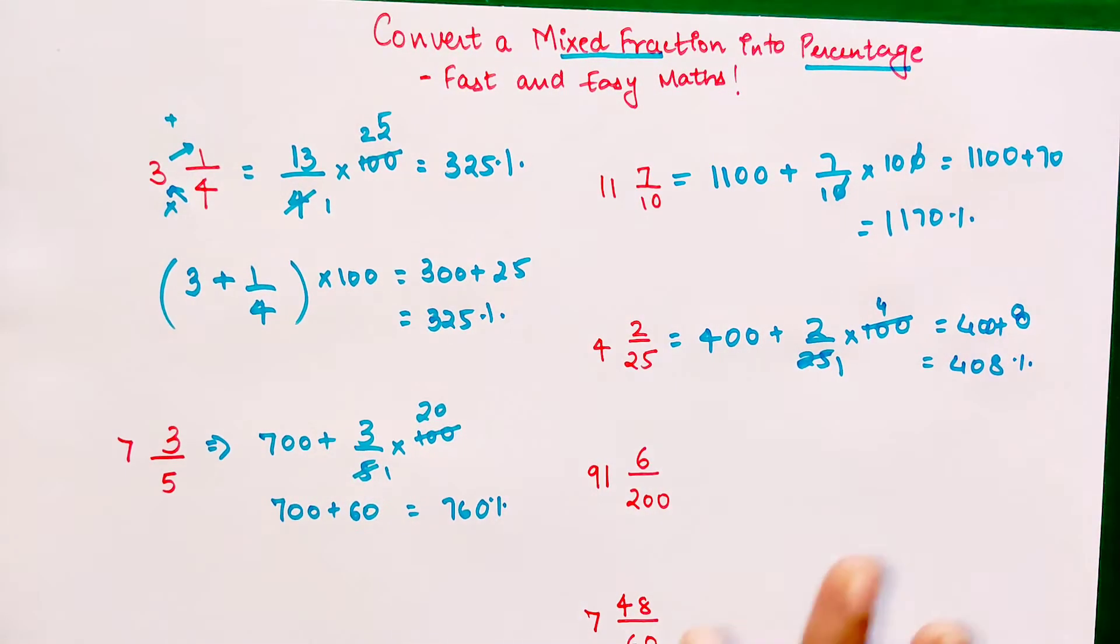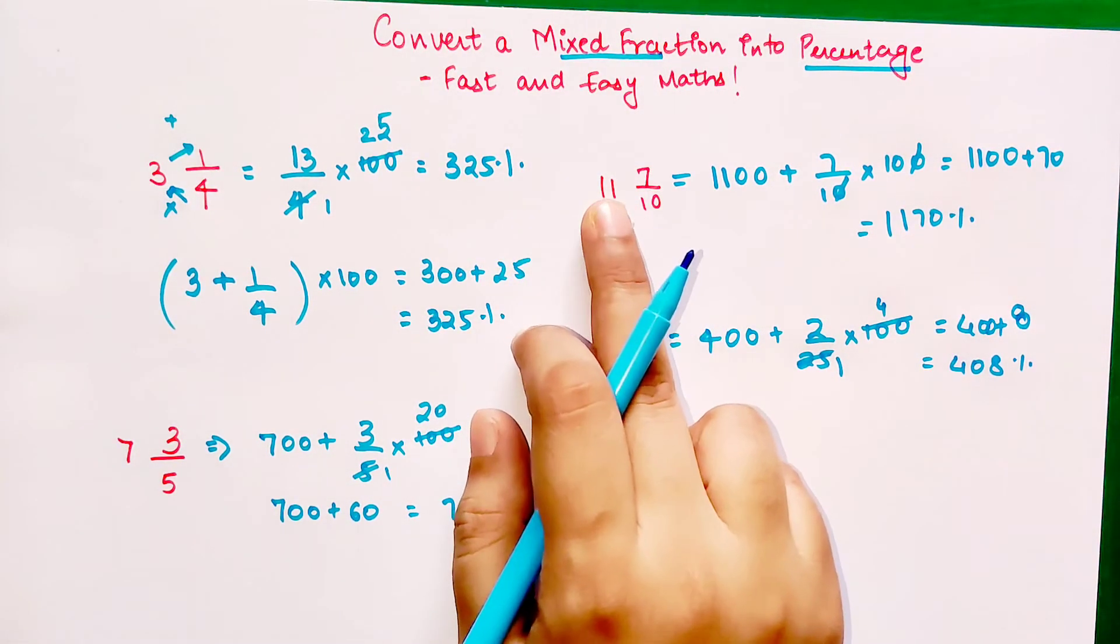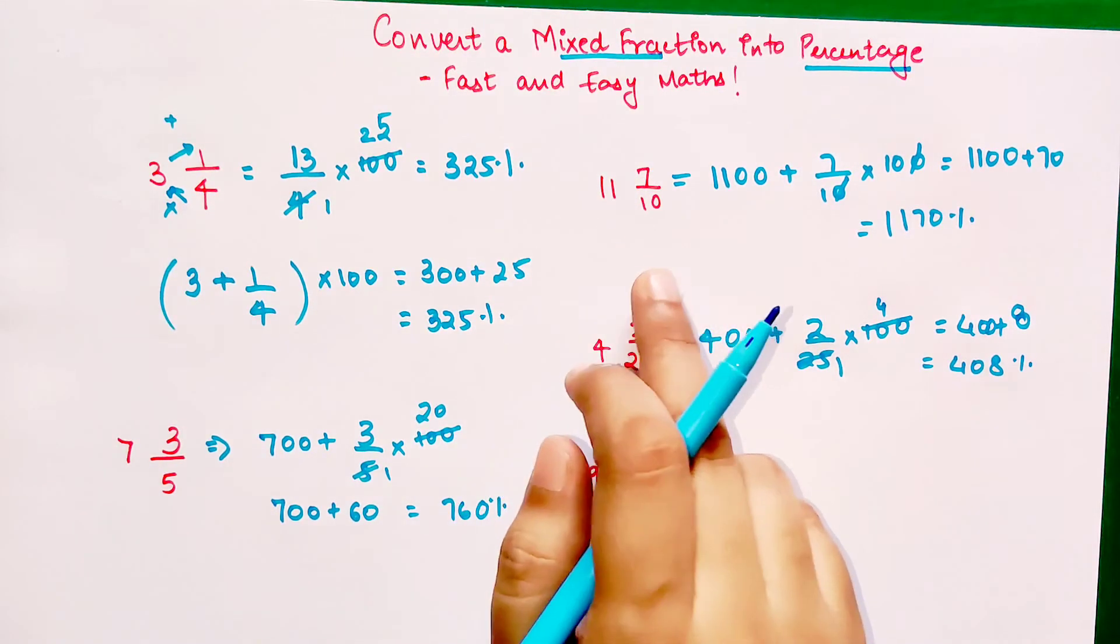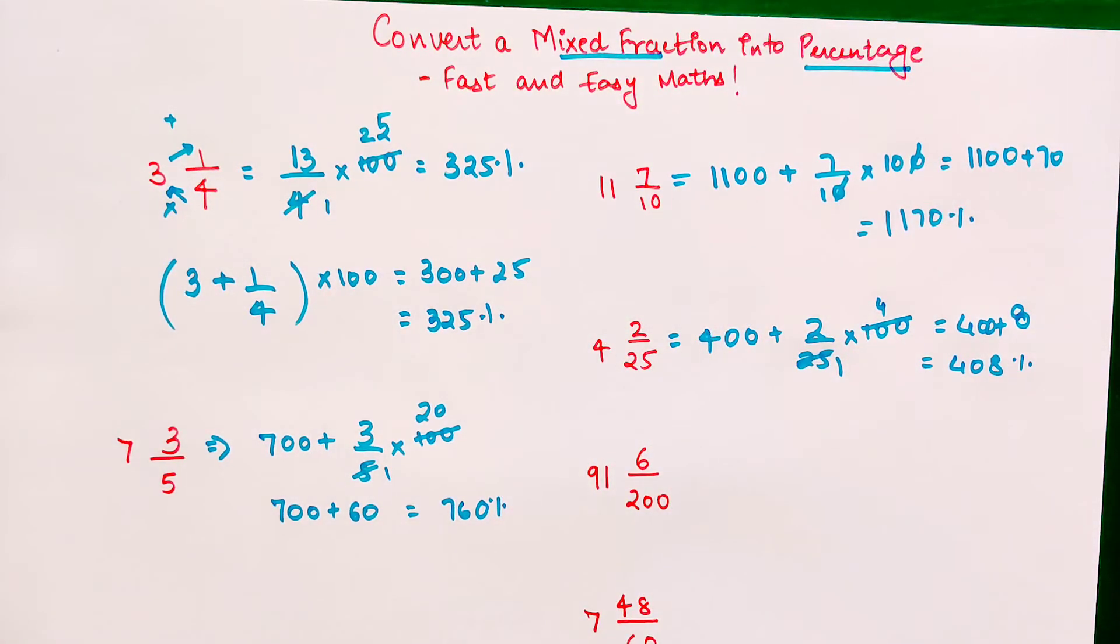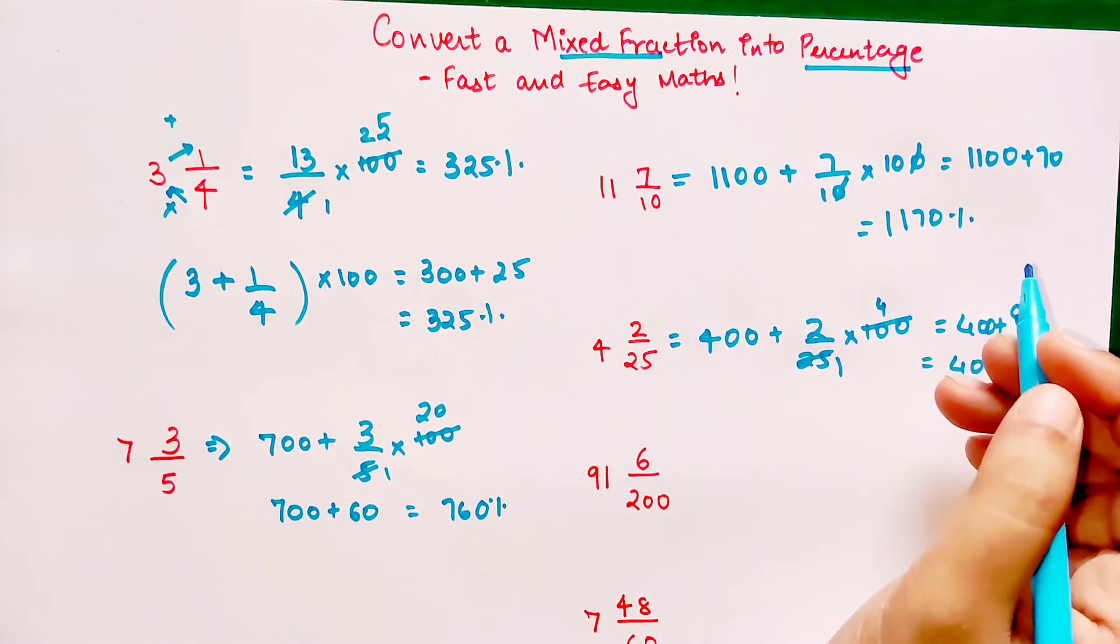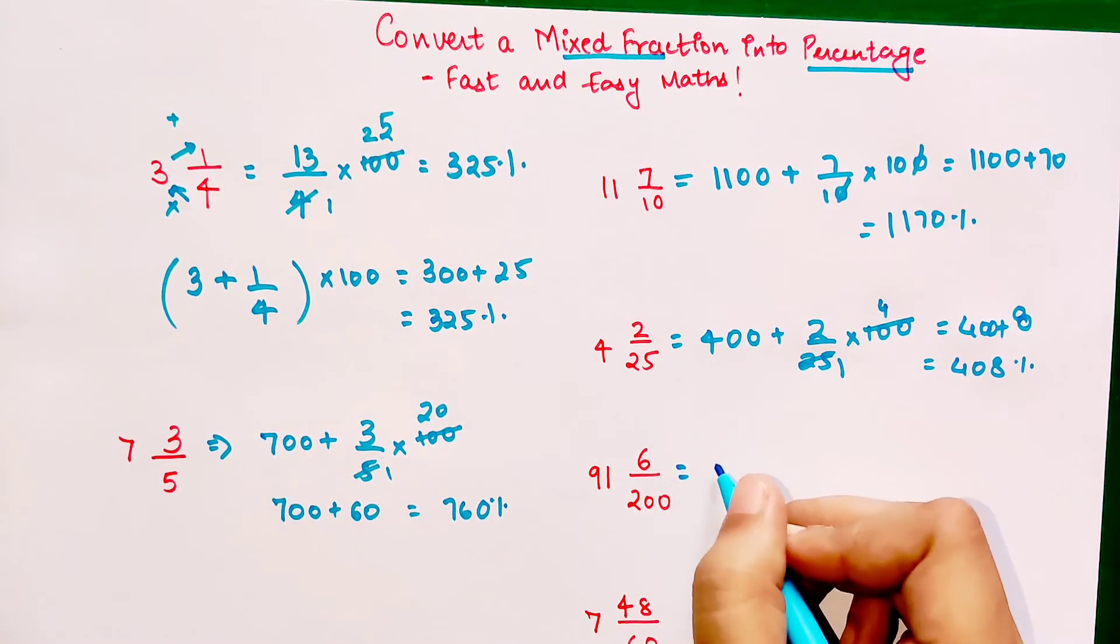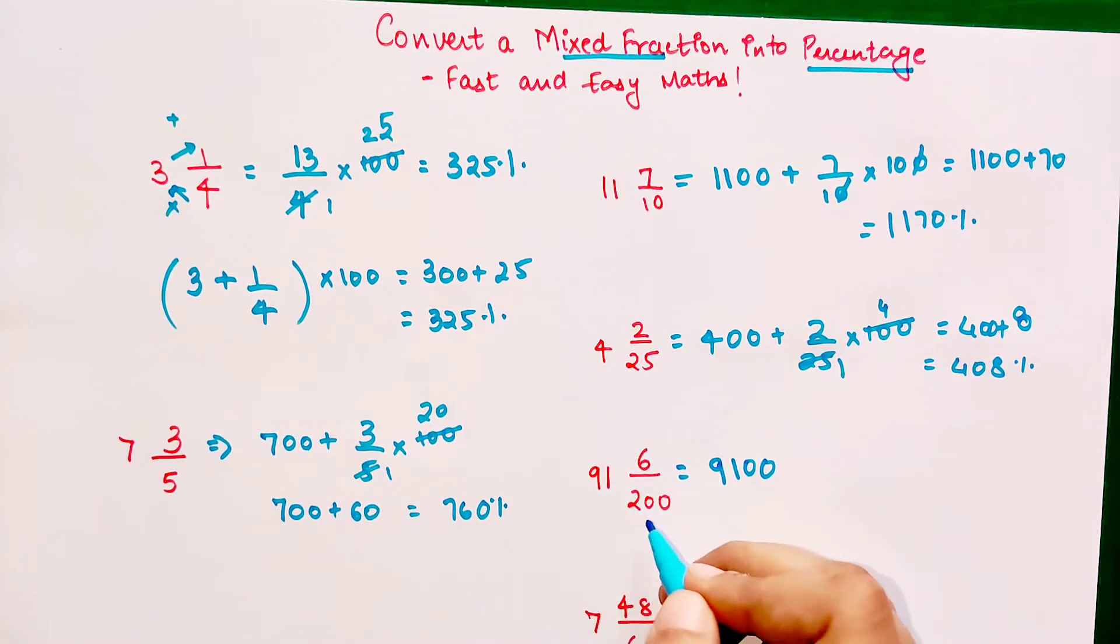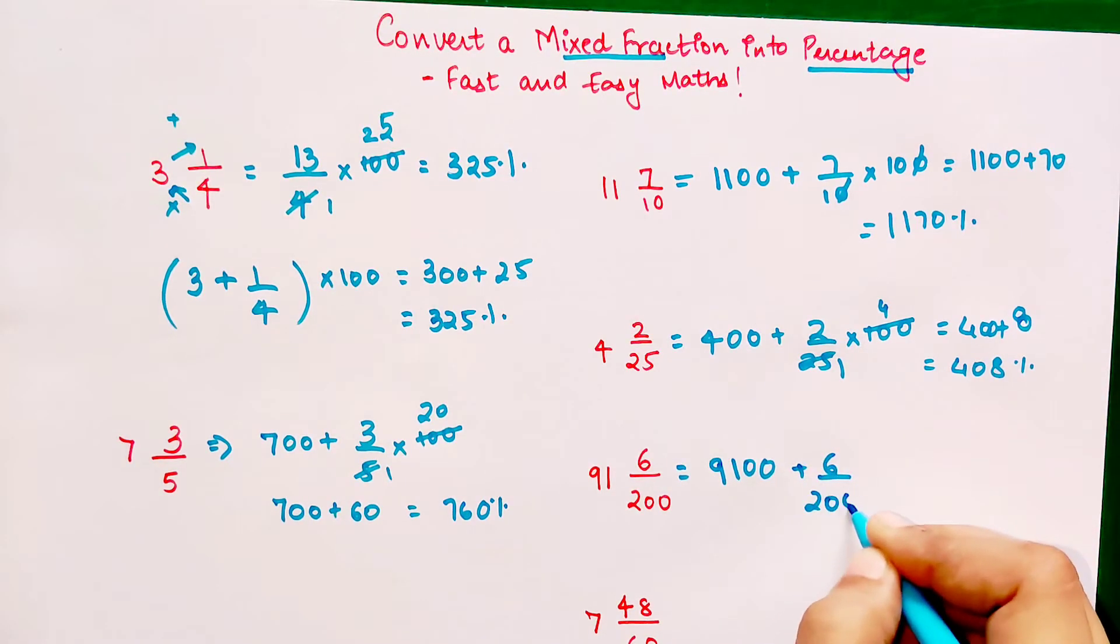You saw how easy this entire calculation became. If you had not learned this trick, in this particular fraction it would have become 11 into 10 which is 110 plus 7, so 110 plus 7 into 100 upon 10. That is not going to be very easy. This is much easier. If you look here also, things are very easy. You just do 91 and add two zeros, you don't have to multiply 91 with 200. Then you have 6/200 into 100.